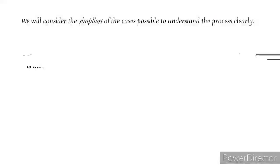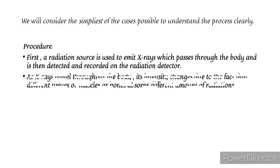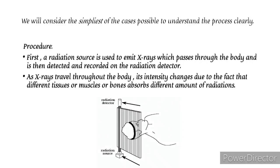We will consider the simplest of the cases possible to understand the process clearly. The overall procedure is as follows. First, a radiation source is used to emit X-rays which passes through the body and is then detected and recorded on the radiation detector. As X-rays travel throughout the body, its intensity changes due to the fact that different tissues or muscles or bones absorb different amounts of radiations. The picture given below shows this with a section of the brain.